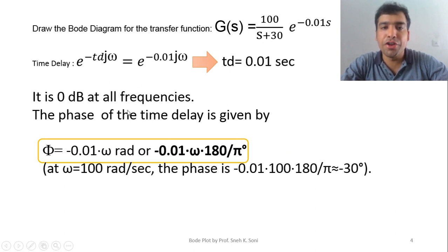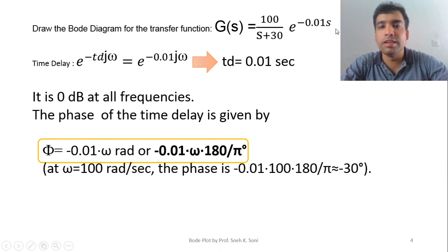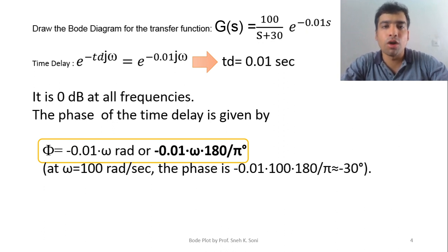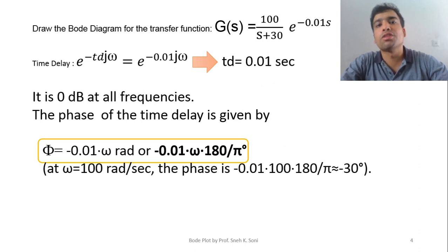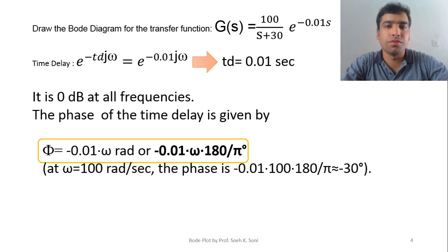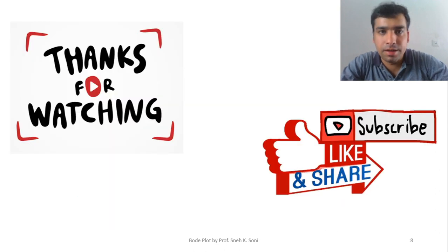You should always clearly identify the effect of the delay term: it will only have a significant effect in the phase plot, whereas the magnitude plot remains the same. However, a change in the phase plot because of the delay will change ω_pc — the phase crossover frequency — and will also change the phase margin, gain margin, and corresponding stability margins. So delay creates a major difference. I hope it is clear, and I will come back with another video, so stay tuned.